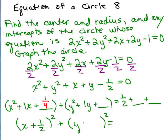We do the same for y: half of its coefficient is one half, so we add one fourth there as well. We're adding one fourth in each parentheses. So on the right-hand side we have one half plus one fourth plus one fourth. One half is two fourths, so we have two fourths plus one fourth plus one fourth, which is four fourths, which equals 1.